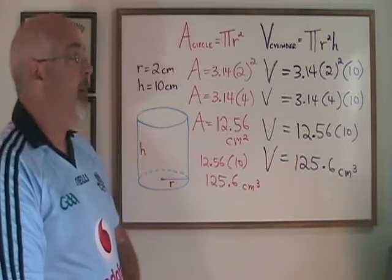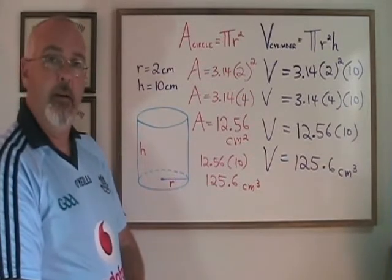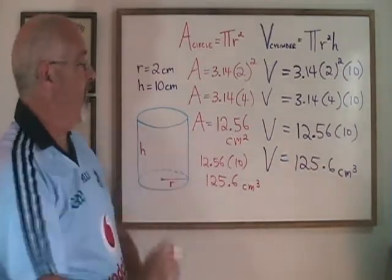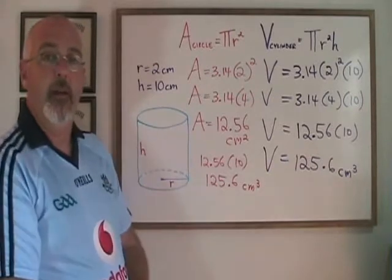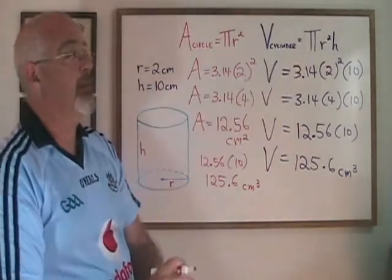To me, the easiest way to remember how to find the volume of a cylinder is just to find the area of the circle at the bottom and then multiply by the height, which is really the same thing we're doing if we memorize this formula.